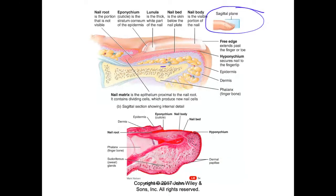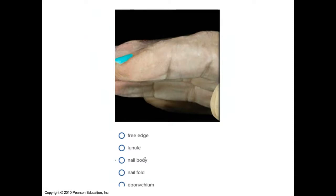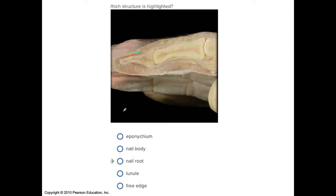On a cross-section side view of the finger, the distal phalange is the bone. From front to back: the free edge of the nail, then the nail body which should look pinkish, then the lunula which is lighter in color, then the cuticle, then the nail root. Posterior to the nail root is the nail matrix — proximal to the nail root — containing those dividing stem cells that produce new nail cells and push the nail forward.